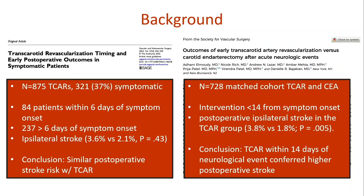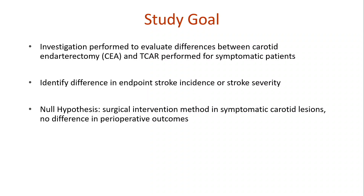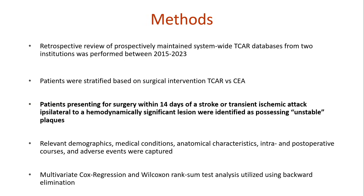So there's some equipoise in the literature. What are we doing in these more vulnerable lesions — are we doing patients a disservice by giving them a TCAR over a CEA? Our study goal was to investigate differences between carotid endarterectomy and TCAR performed for symptomatic patients, identifying differences in stroke incidence or stroke severity. Our null hypothesis was that surgical intervention, regardless of type — CEA versus TCAR — conferred no difference. The big question in the study is: how do we define an unstable lesion?